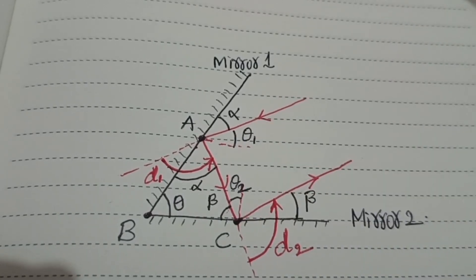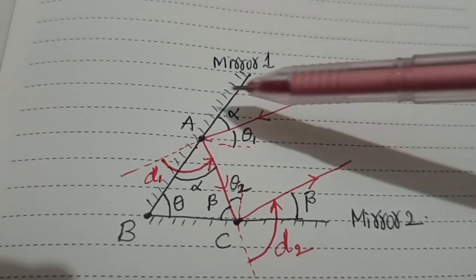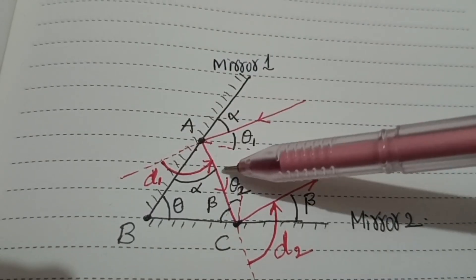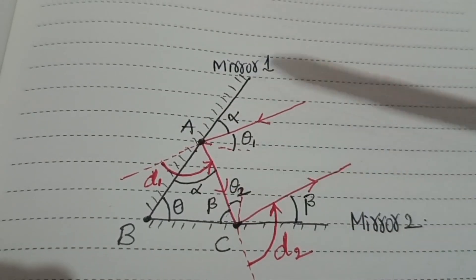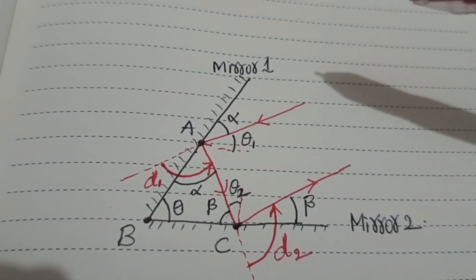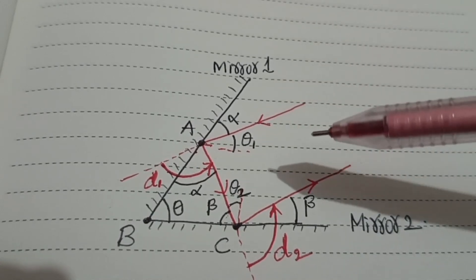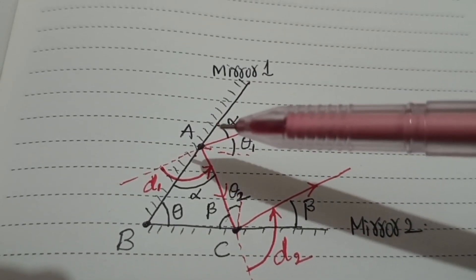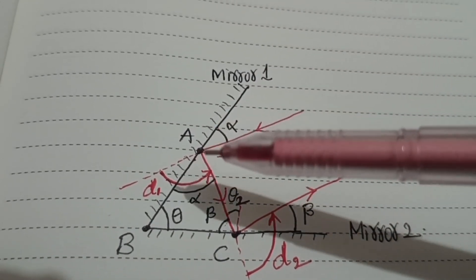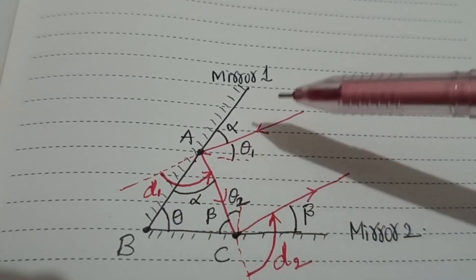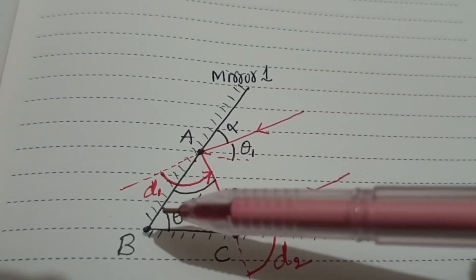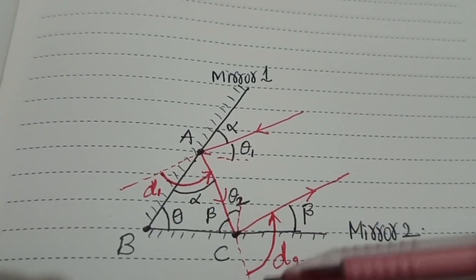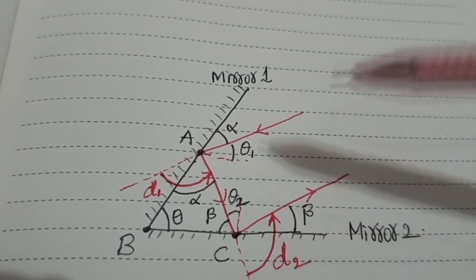Now I want to find what is the total deviation. Total deviation is nothing but the deviation produced by plane mirror 1 plus the deviation produced by plane mirror 2.